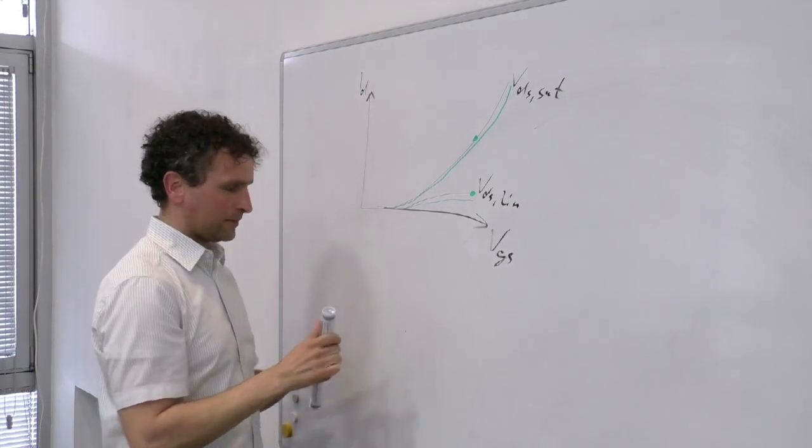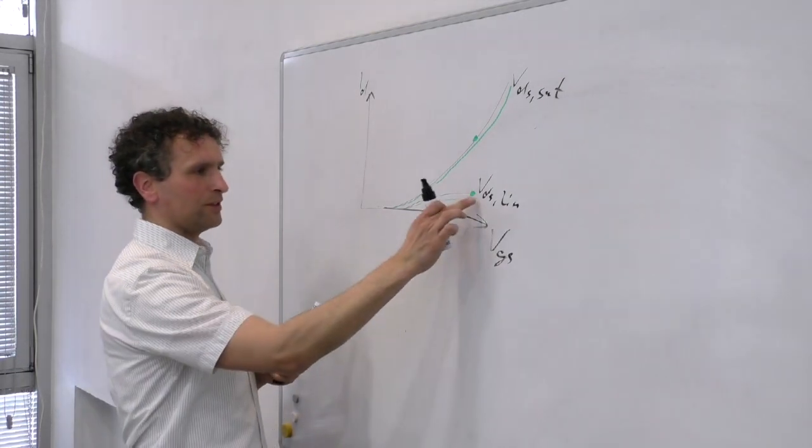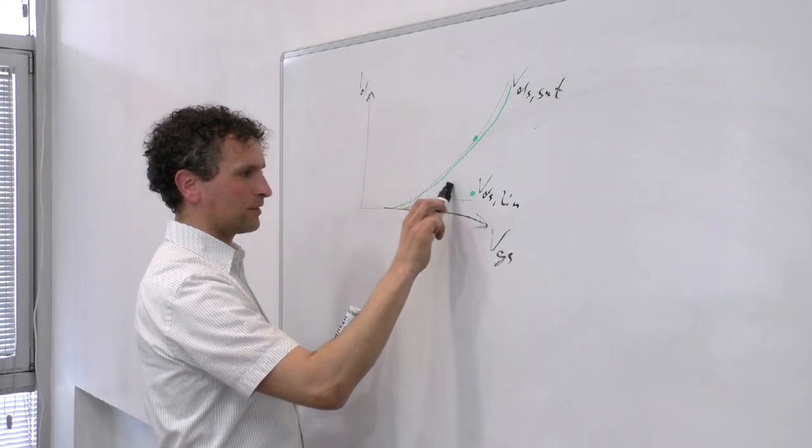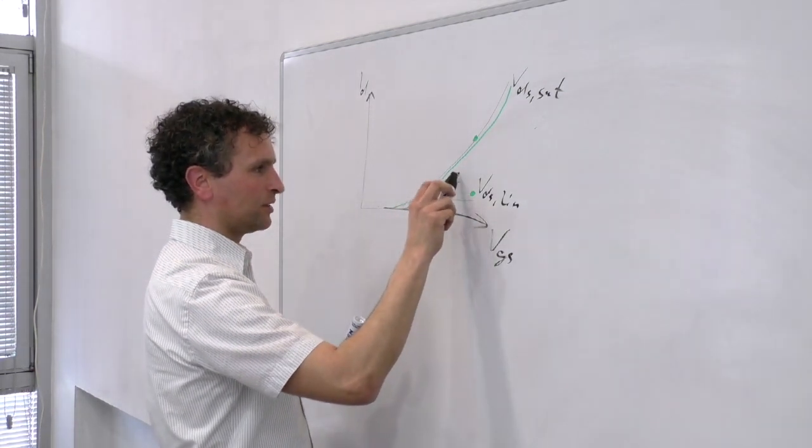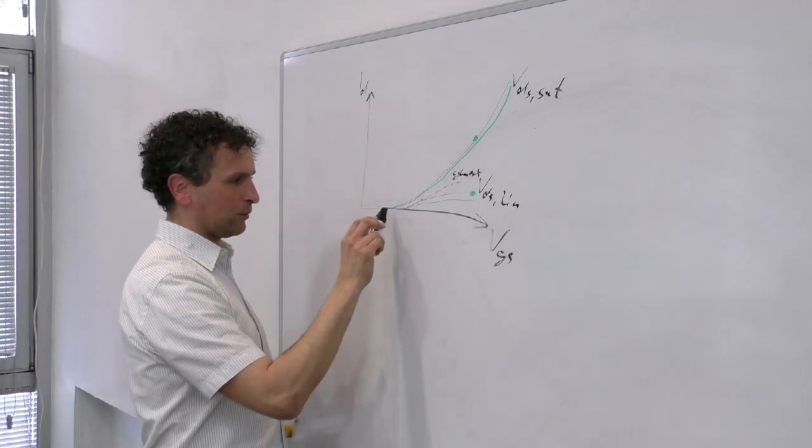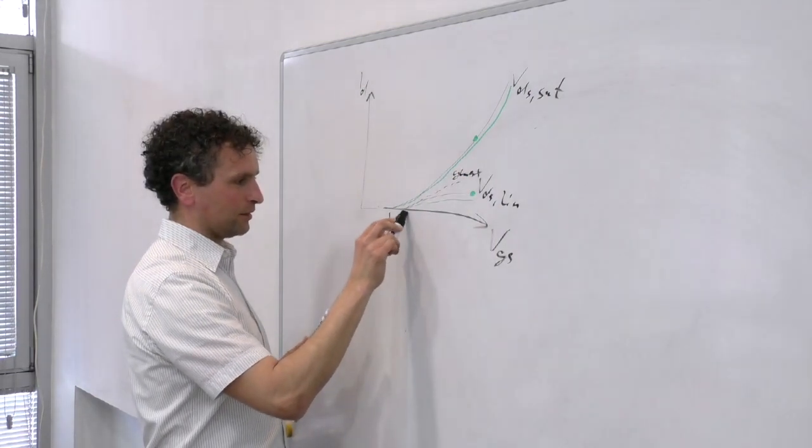You can define the derivative of this curve here, that was the maximum, which is G-Max. And you can find the threshold voltage somewhere down here, depending on its definition.